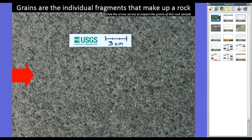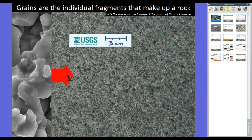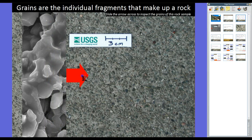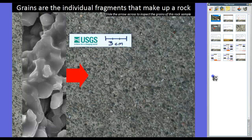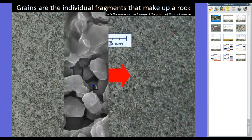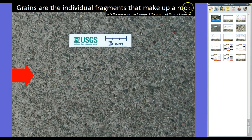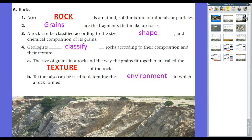Grains are the individual fragments that make up a rock. If we look at this conglomerate rock, at the microscopic level we see individual minerals that come together to form grains, and these individual fragments put together are what we call rock. The larger the grains, the more coarse the texture. The smoother the texture, the smaller the grains.